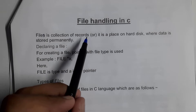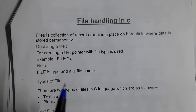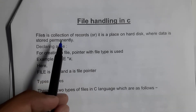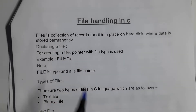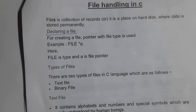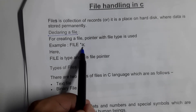First, what is a file? A file is a collection of records. For example, a PDF file contains some text information — we call this a collection of related information, because we store only related information in our files. Files are stored on the hard disk, which is a permanent storage device. To declare a file in C, we use the FILE type along with a pointer variable.